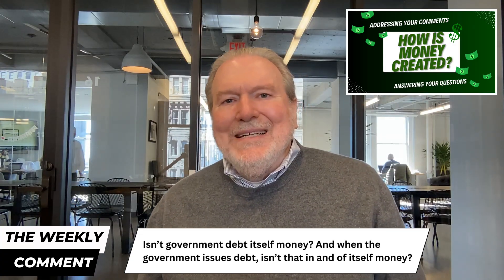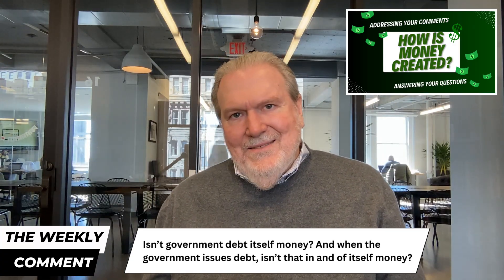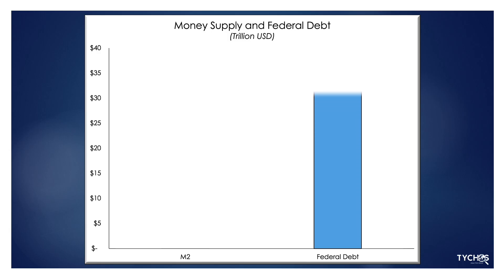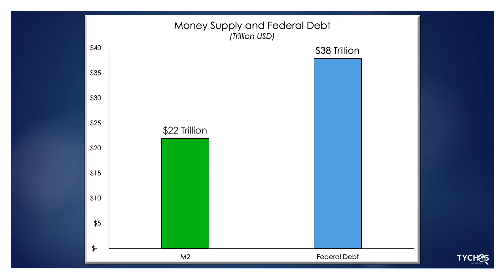But they are two entirely different things. Government debt now totals $38 trillion, and it's just that — government securities, bonds, notes, and bills. The money supply is completely separate. And as we discussed, it is largely comprised of bank deposits plus currency. And the Fed puts this money supply, or M2 as we've mentioned it being called, at $22 trillion.